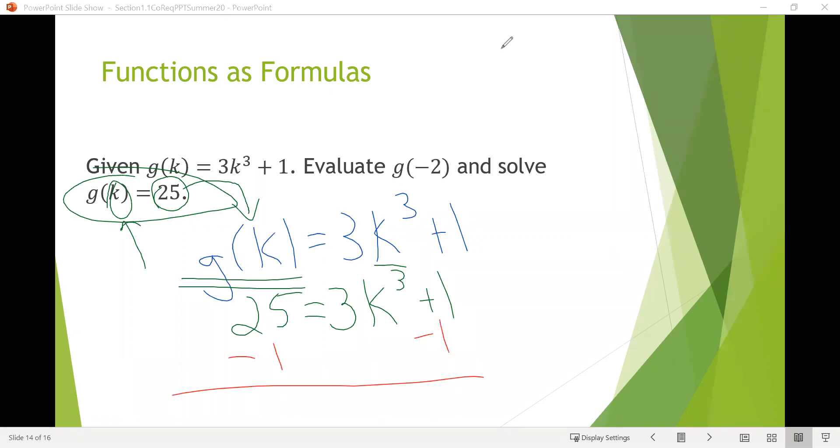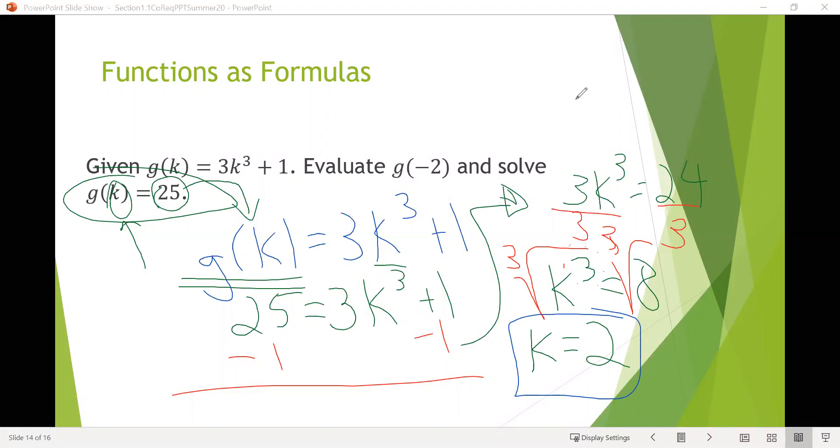To solve for k, we'll subtract 1 from both sides, so then we'll have 3k cubed equals 24. Divide by 3 on both sides, so we have k cubed equals 8. When we have something cubed like this, we need to undo it to solve for k. We can do a root that is the opposite, so we can do the cubed root of 8 on both sides of the equation. Doing that will give us k equals 2. You can double check that in the calculators or just think about 2 times 2 times 2 is 8.